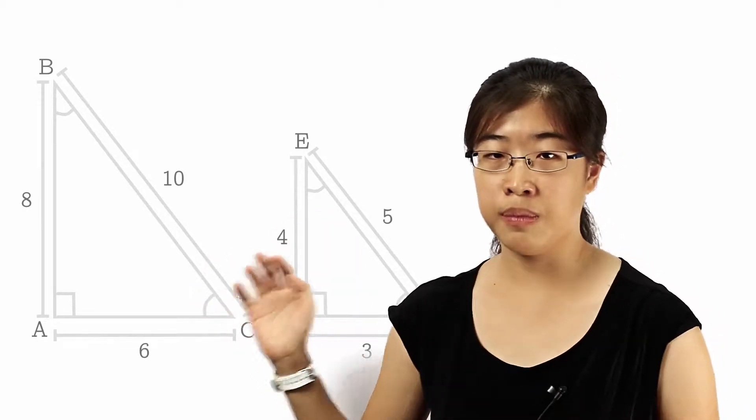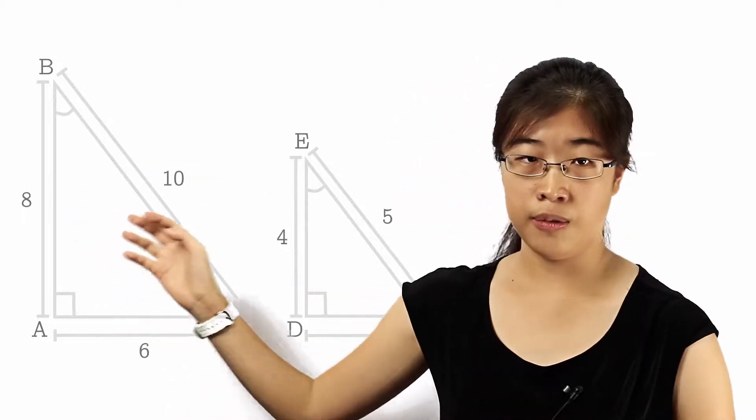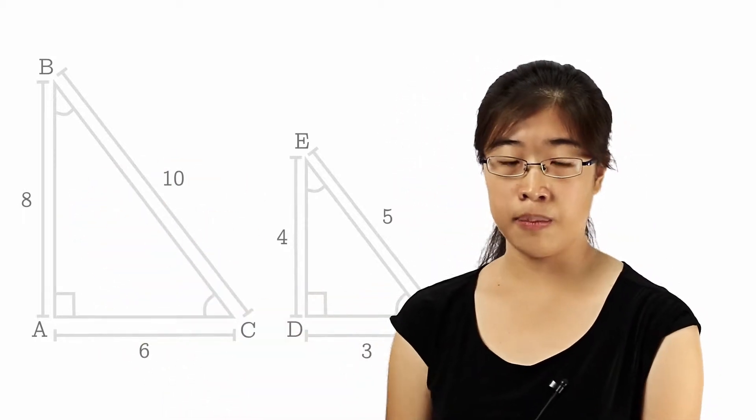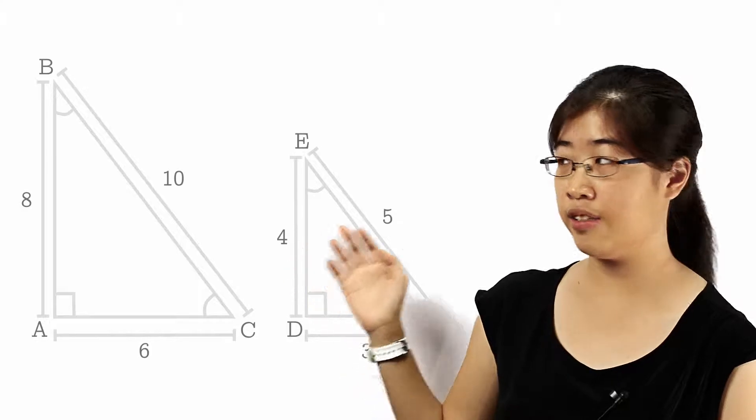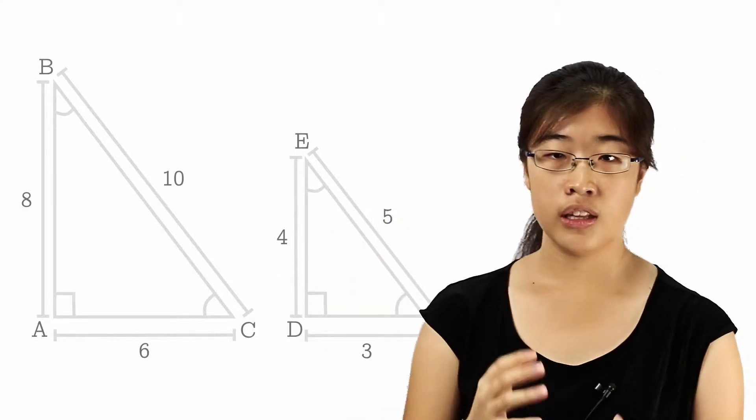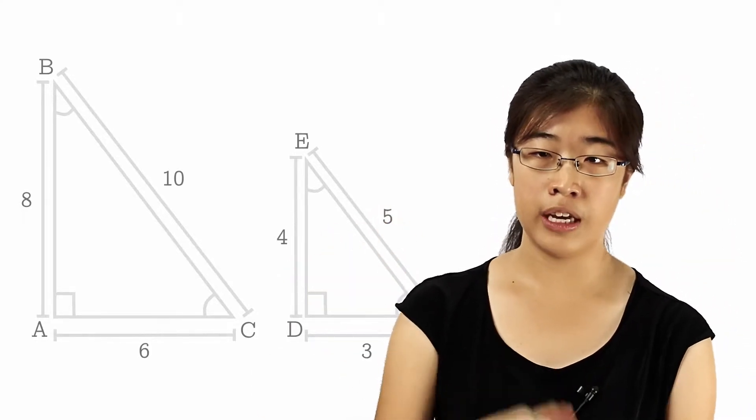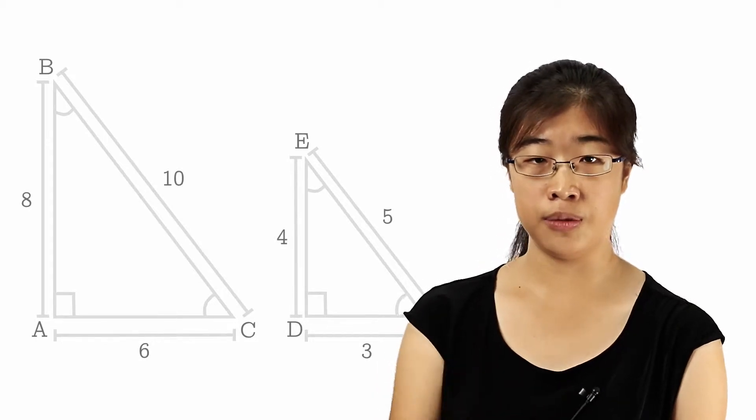Look at two similar right angle triangles. ABC has sides 6, 8 and 10, and DEF has sides 3, 4 and 5. The ratio of the sides of triangle ABC to the sides of triangle DEF is 2 to 1.